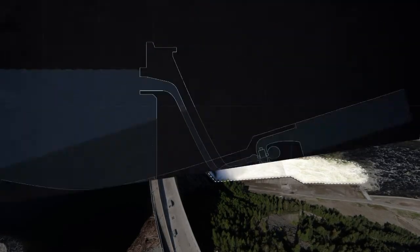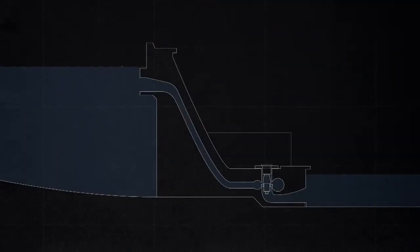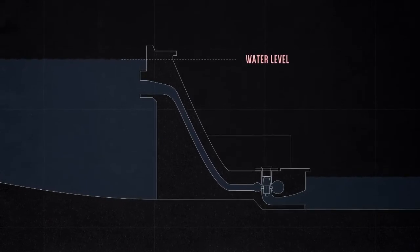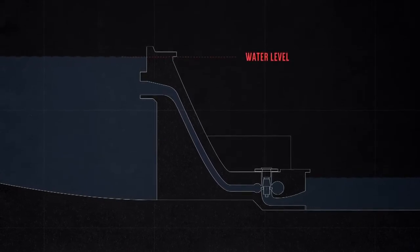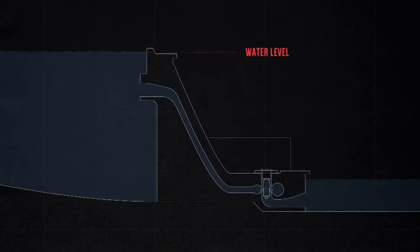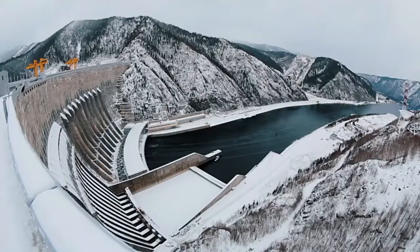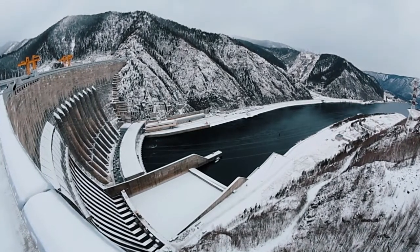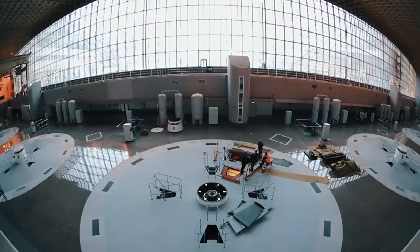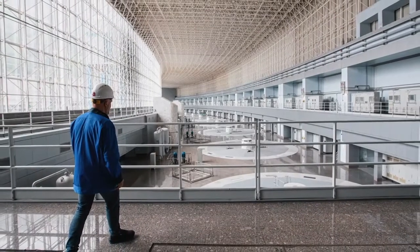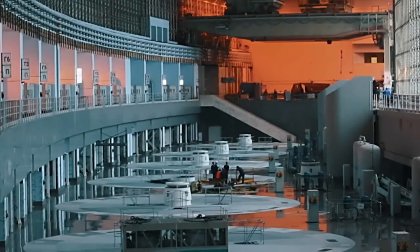If the gates had remained open, the water would have continued to flow, building up behind the dam until it enveloped or destroyed it entirely. Meanwhile, water continued to pour into the turbine hall, flooding its lower levels and eventually submerging other turbines.